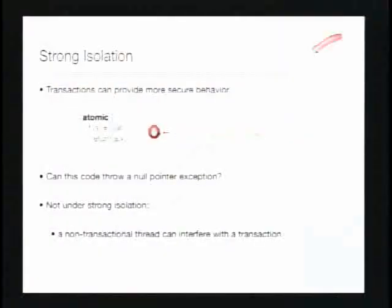Transactions can provide more secure behavior. Under strong isolation, a transactional memory implementation will prevent another thread from violating the isolation of this code — the transaction is really guaranteed to be atomic, no other thread can interfere. The null pointer exception cannot be thrown. Under strong isolation, a non-transactional thread cannot interfere with a transaction. I can just throw atomic around something, reason about it locally, and know it's never going to throw a null pointer exception without carefully checking all other parts of my program.